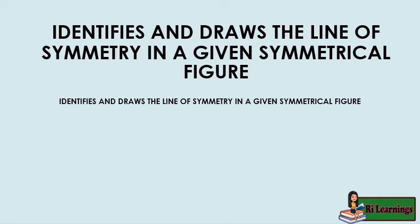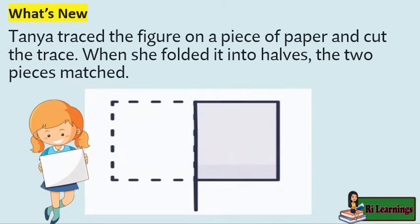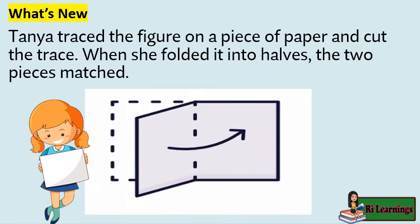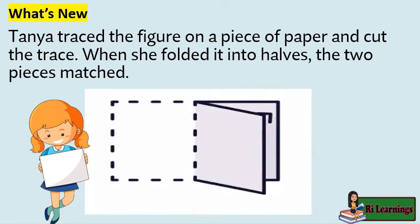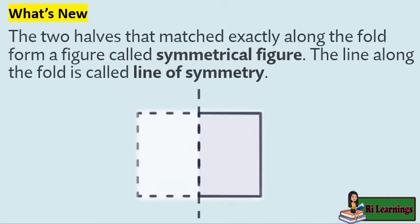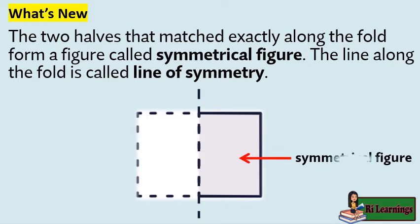Identifies and draws the line of symmetry in a given symmetrical figure. Tanya traced the figure on a piece of paper and cut the trace. When she folded it into halves, the two pieces matched. The two halves that matched exactly along the fold form a figure called a symmetrical figure. The line along the fold is called the line of symmetry.